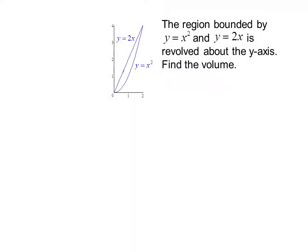Here's another example. The region bounded by y equals x squared and y equals 2x is revolved about the y axis. Find the volume. We sketch our region, and we get a shape that looks something like the top of a wine glass, hollow in the inside.